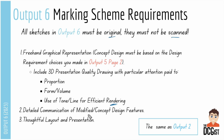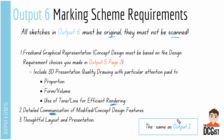The idea is to have a detailed communication of the modified concept design features. That comes from the annotation — you have the main sketches, but also smaller sketches around the big one, with annotations providing that detailed communication. This page is all about communicating your concept design and how it works to the person reading. They're also looking at your overall layout and presentation — the sizes of sketches on the sheet and making sure everything is laid out in a way that's easy to read. It's pretty much the same as output 2, except for your own design rather than the existing artifact.